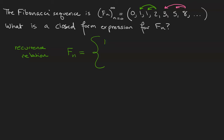For example, Fn is equal to Fn minus 1 plus Fn minus 2, so long as n is greater than 1. Fn is equal to 1 when n is 1, and Fn is equal to 0 when n is 0.